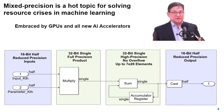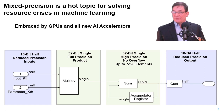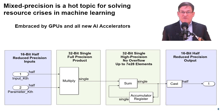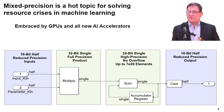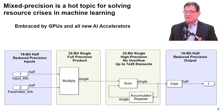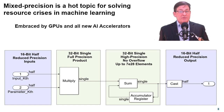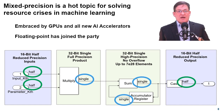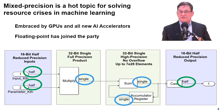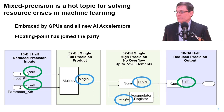Deep learning can achieve breakthrough results, but it can be incredibly resource greedy. These two facts have led to an explosion of new chips aiming to exploit the proven benefits of mixed precision. As this model of an NVIDIA Tensor Core shows, mixed precision floating point is now an option too.